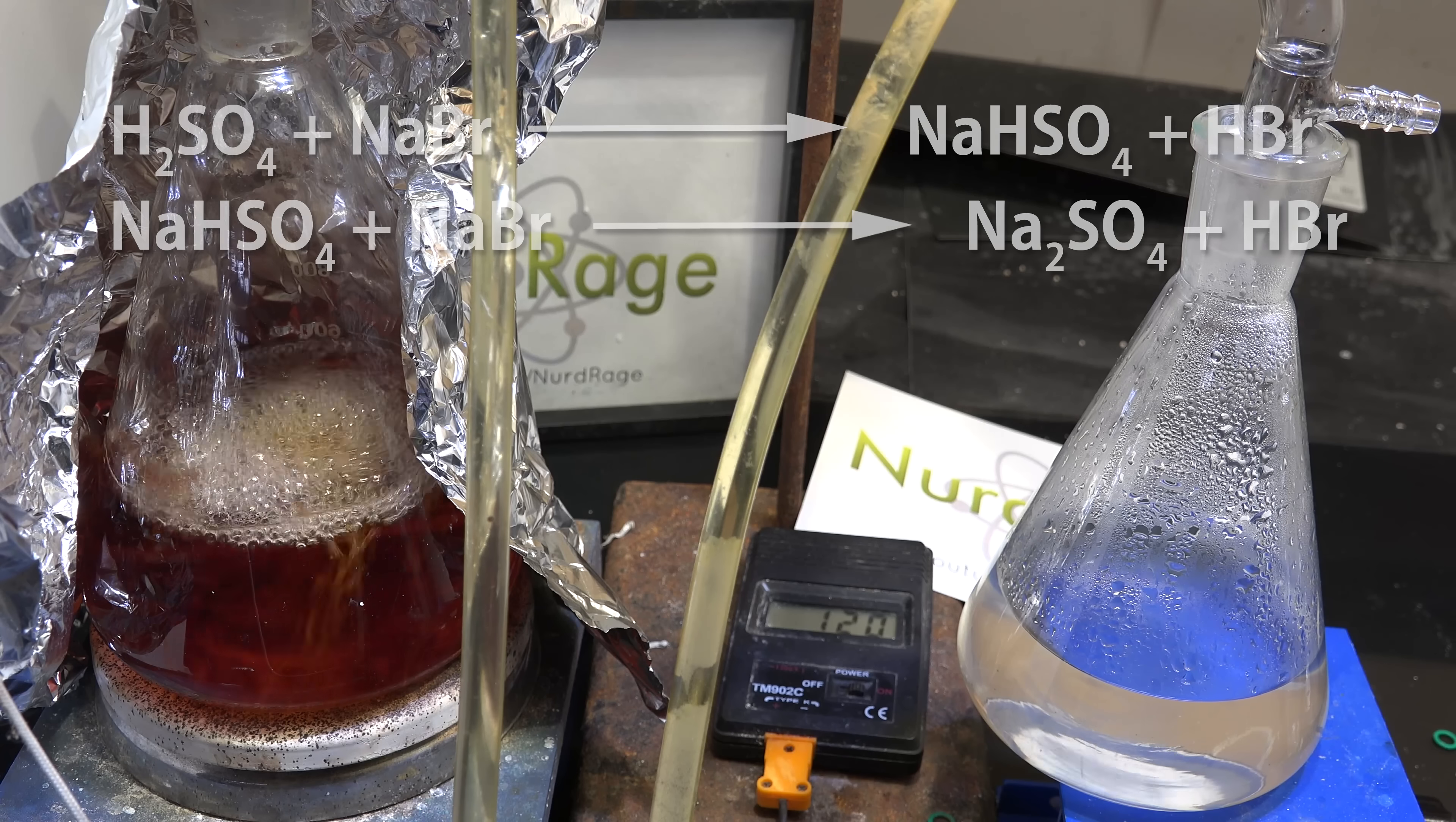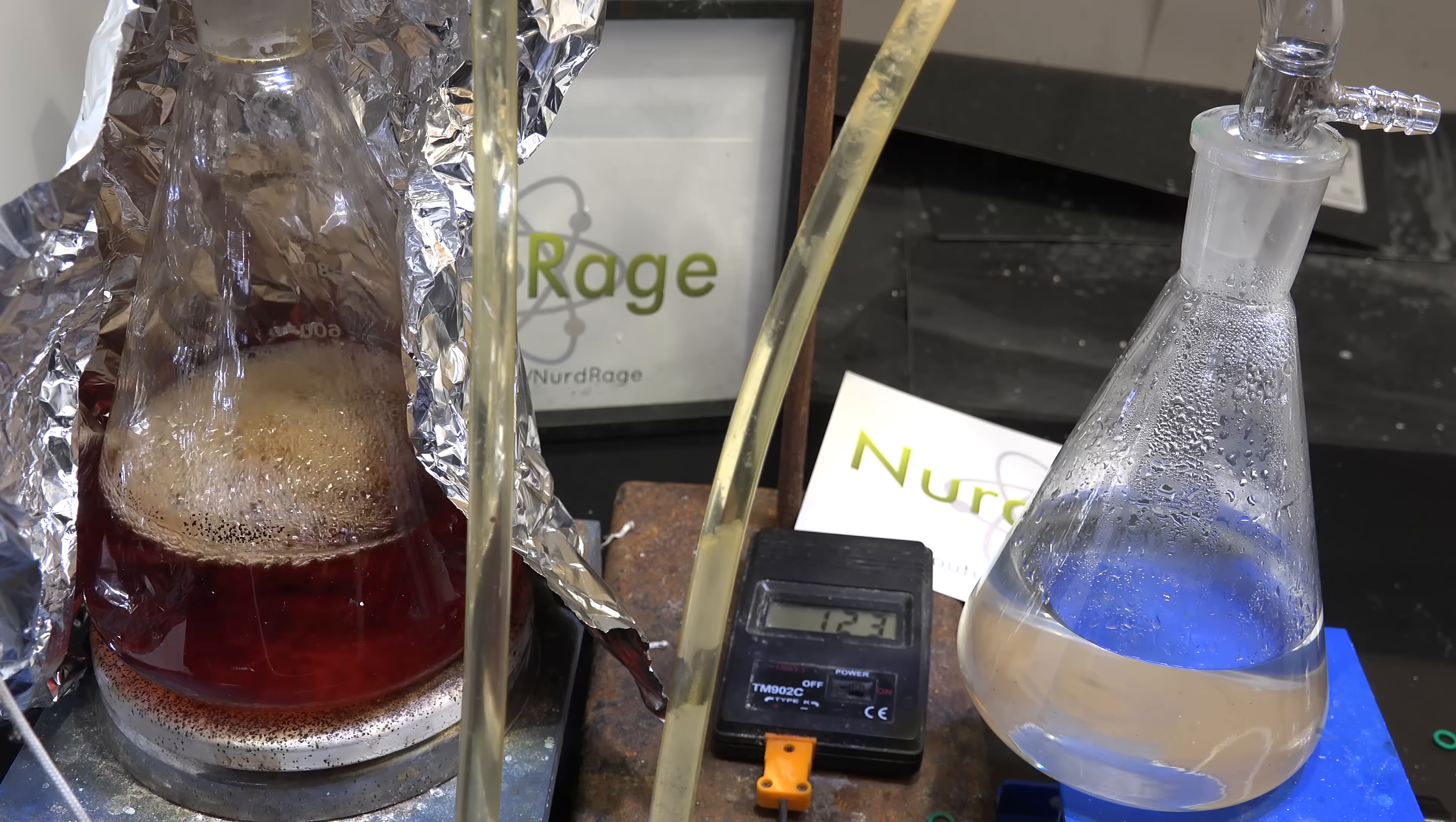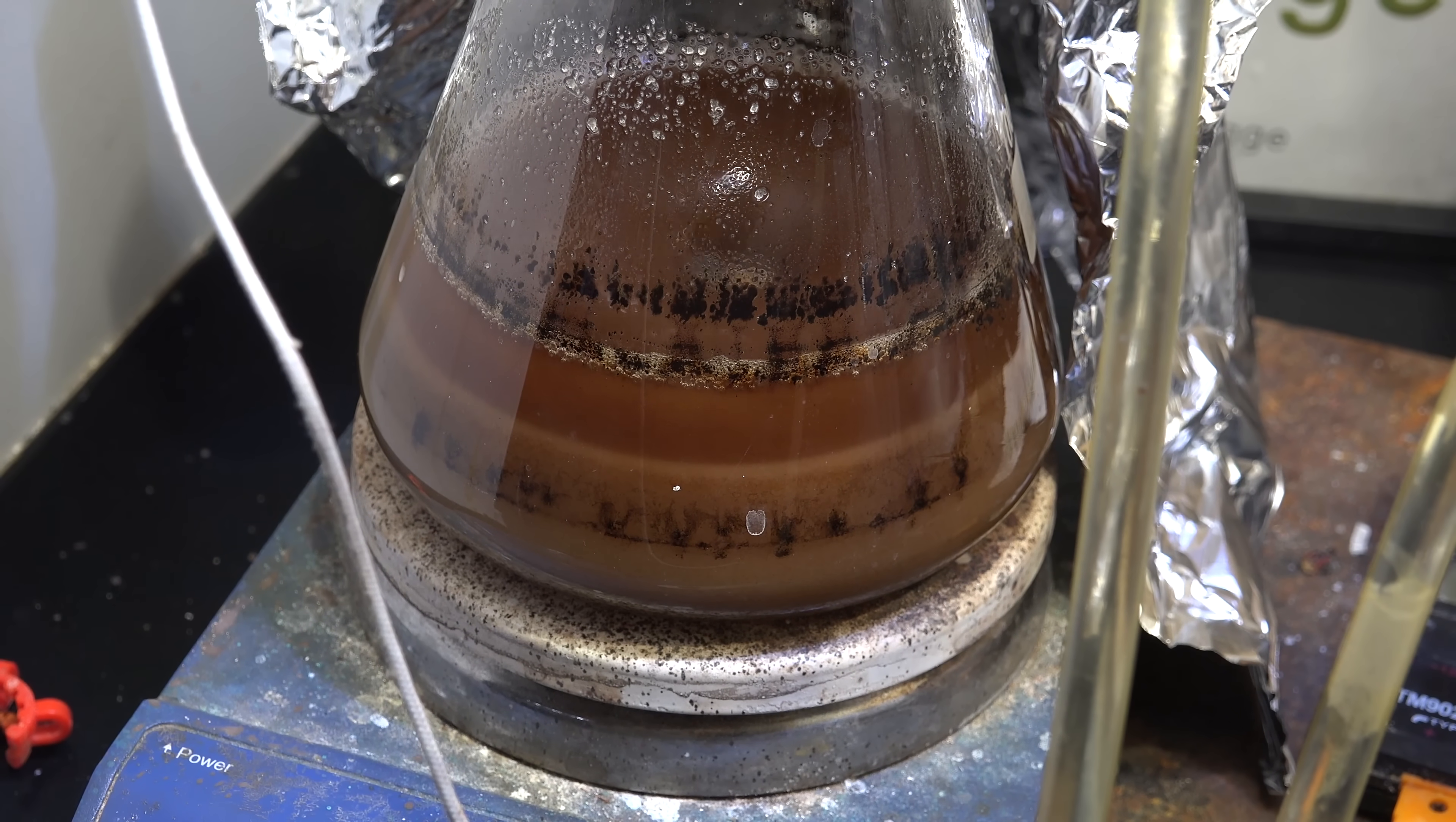Now as we distill we drive the reaction forward as only hydrobromic acid distills. However we have lots of sodium sulfate and bisulfate salts and they'll crystallize out during distillation, making it much harder to distill further. So after about half the liquid has been distilled, stop the distillation and cool to room temperature.